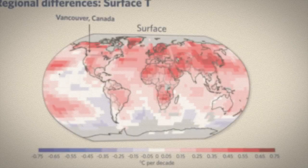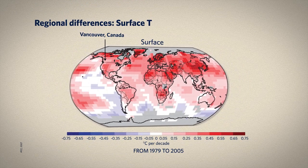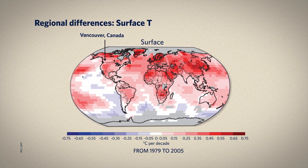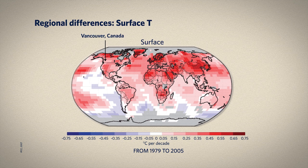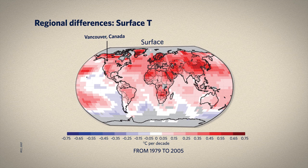Here's another way of looking at temperature changes over time. This global map shows the rate of surface temperature change in degrees Celsius per decade for data from 1979 to 2005. With this map, we can look in greater detail at different regions. For example, where I live in Vancouver, Canada, during this period my area got warmer at a rate of about a tenth of a degree Celsius per decade.